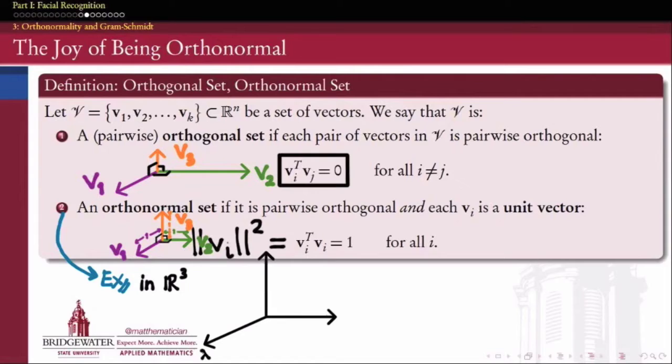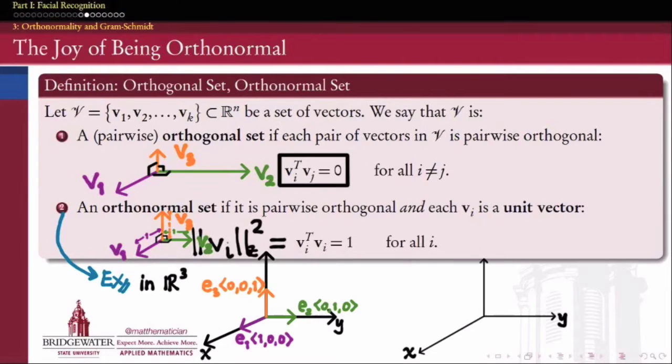Let's look at a couple quick examples in R3. Starting with the standard basis vectors, 100, 010, and 001. Our standard basis in R3 forms an orthonormal set. But it's by no means the only orthonormal set of vectors that we could form in R3 even. So here's another set, v1, 0.8, 0.6, 0, v2, negative 3, 0, 4, and v3, 0, 1, 0.